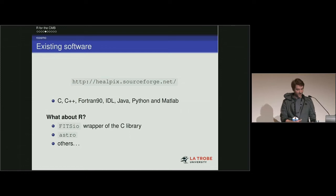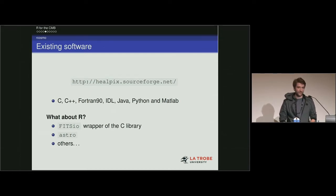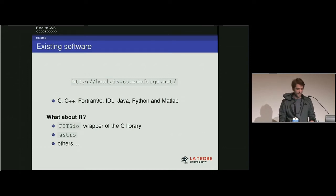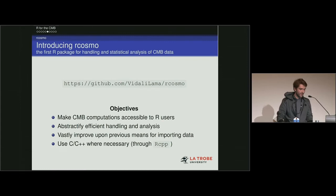In R, there's the fitsIO package for reading FITS files, but for the particular maps I was working with it was taking 40 minutes to read in — they're only about 300 megabytes, but it would crash my computer. It's 50 million rows. There are a couple of other packages for working with astronomical data generally, but rCosmo is the first R package for analysis of the CMB.